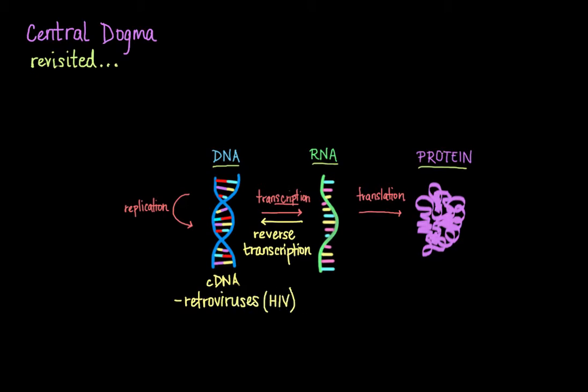These retroviruses use the enzyme to reverse transcribe their RNA genomes back into DNA, which is then integrated into the host genome and replicated along with it. So this is the first idea that was discovered back in 1970 that violated the central dogma. It was very unpopular at first, saying that information can actually flow from RNA back to DNA.